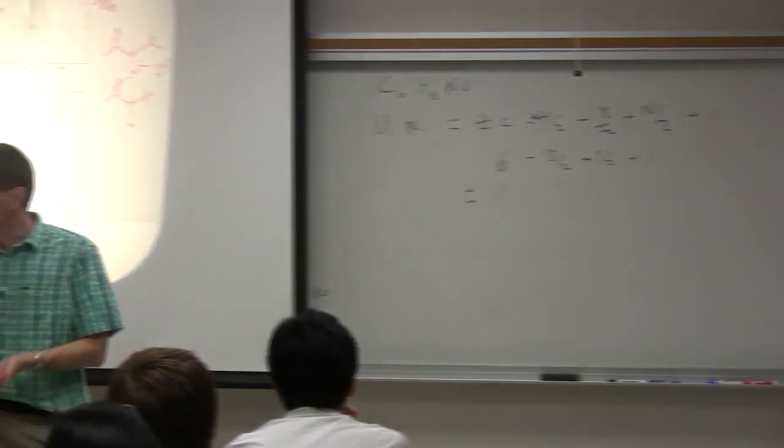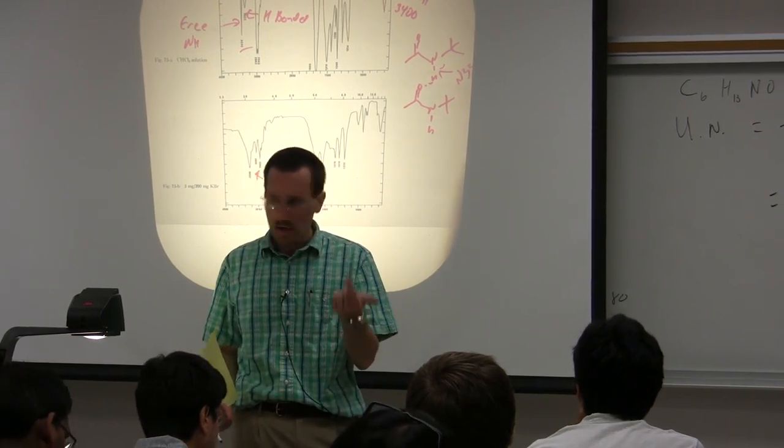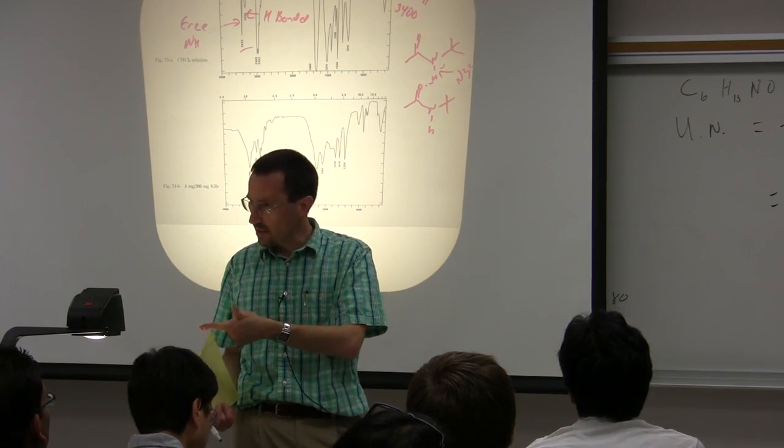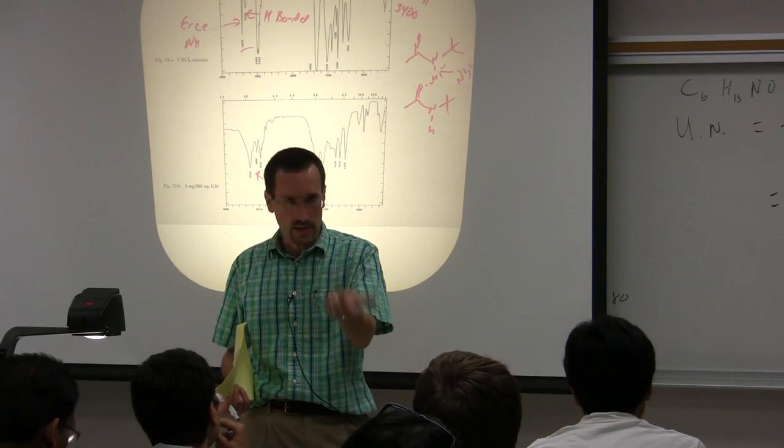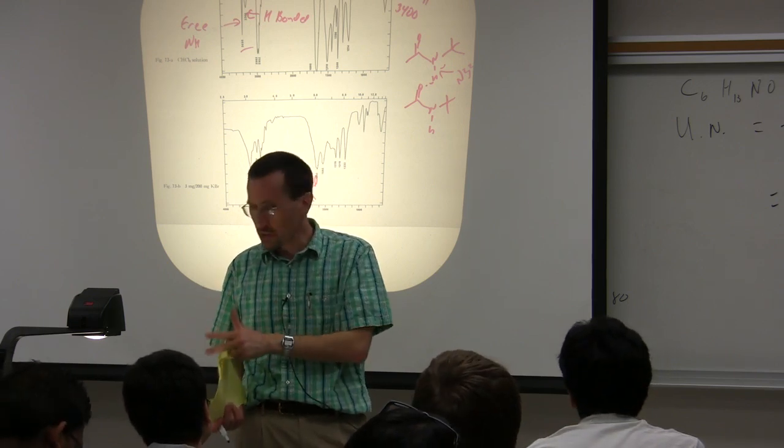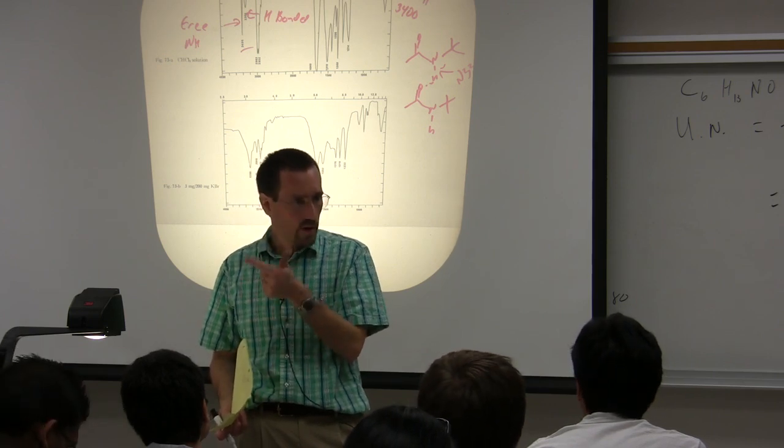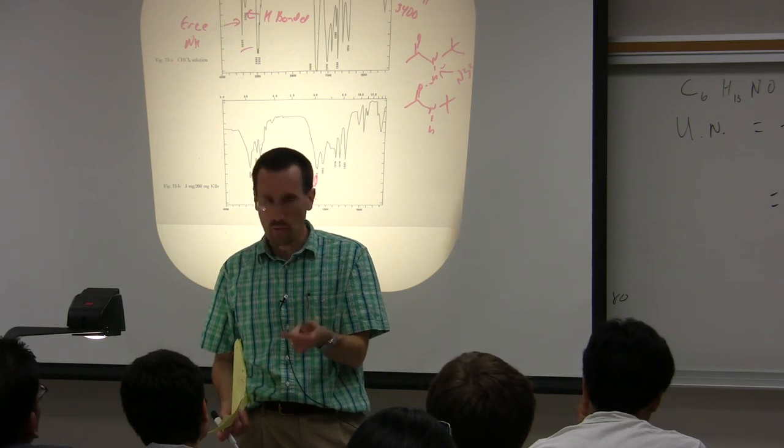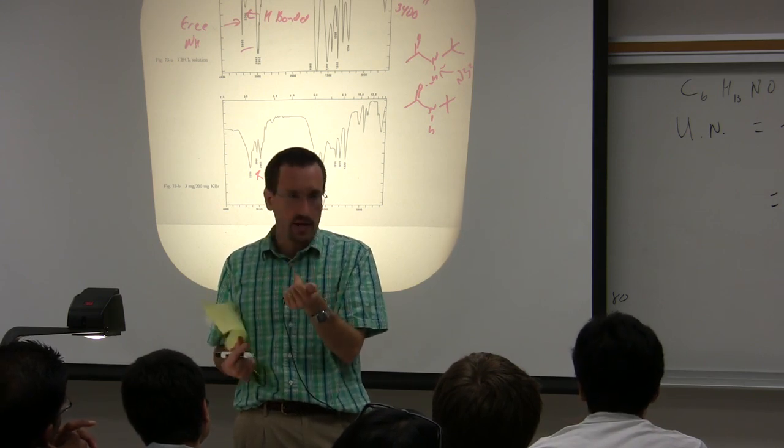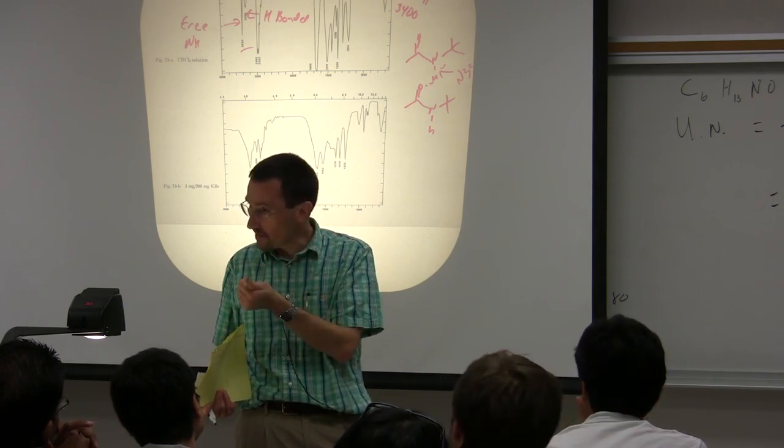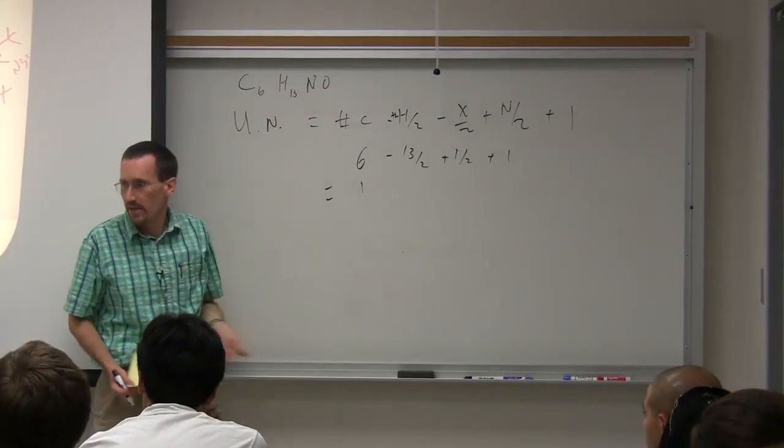The way I think about it is if a molecule has 6 carbons in it, if it were an alkane, it would be C6H14. If it has halogens in it, they just count as hydrogen. So C6H14 is saturated, C6H13Cl is saturated. Oxygens don't count toward unsaturation number. Sulfurs don't count toward unsaturation number. Nitrogens, you need one more hydrogen in there to complete the valence. An alkane would have a formula C6H14. If I add a nitrogen, it would have to be C6H15. Then I simply look and say it's H13, so there's one degree of unsaturation.